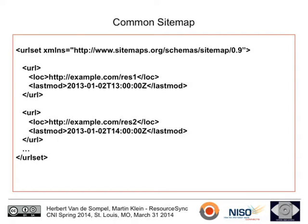For those unfamiliar with sitemaps: it's an XML document starting with a root element URL set. For each resource described in a sitemap, you have a URL block. Within the URL block is a loc element — mandatory — holding the actual URL of the resource. So three elements are mandatory: urlset, url, and loc. Often there's also a lastmod indicating when the resource last changed, which is optional but very frequently used. Multiple URL blocks appear in the same sitemap, one for each resource.